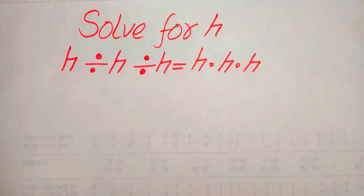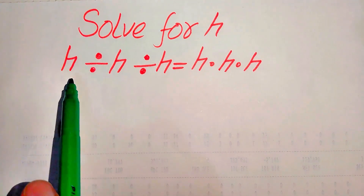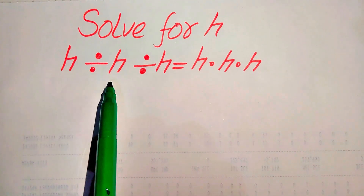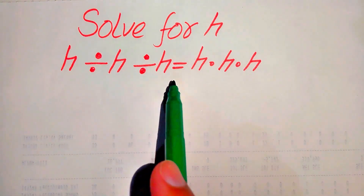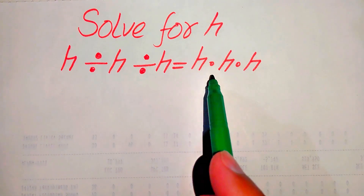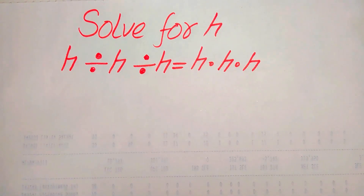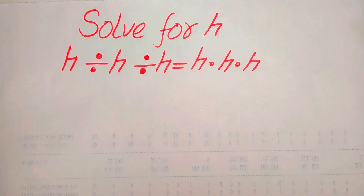Hello everyone. How to solve this problem for the values of h, if we have h divided by h divided by h is equals to h multiplied by h multiplied by h. So, we solve this problem for the values of h.